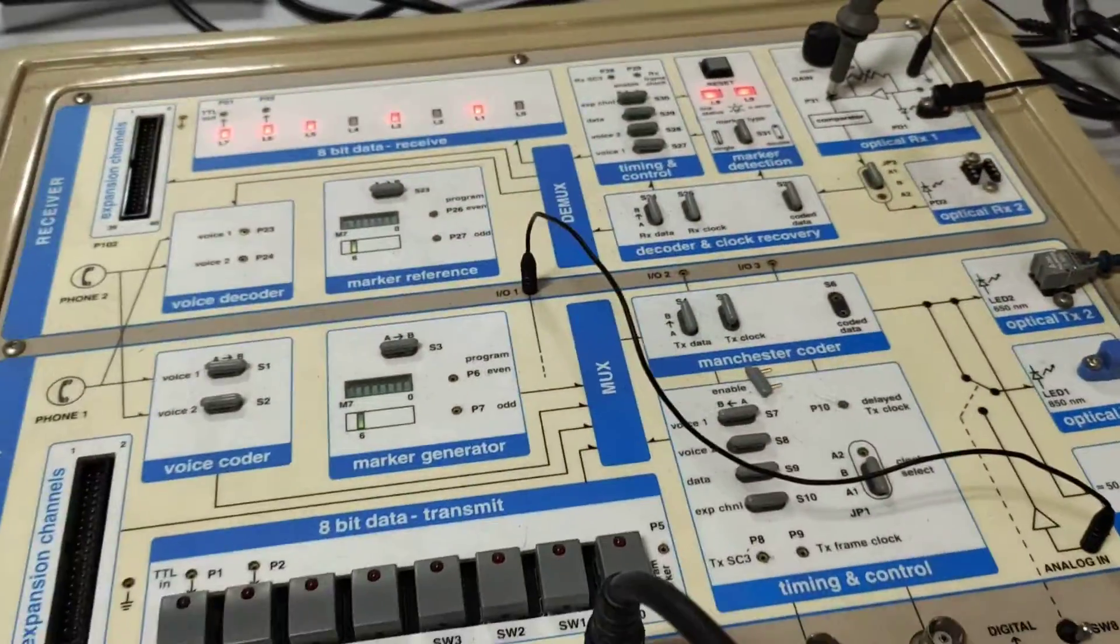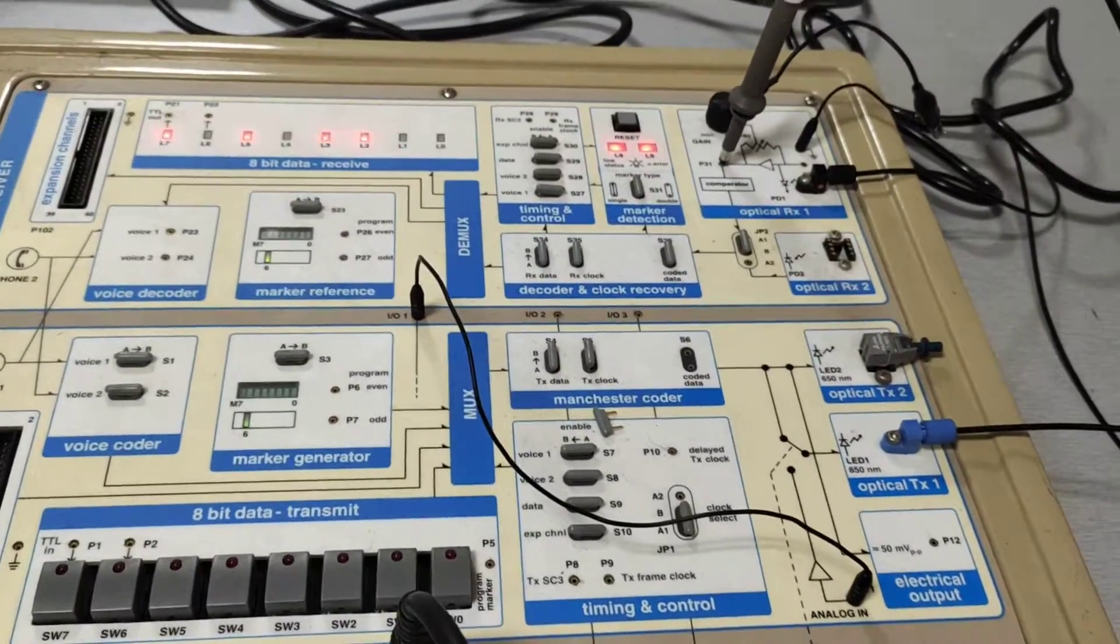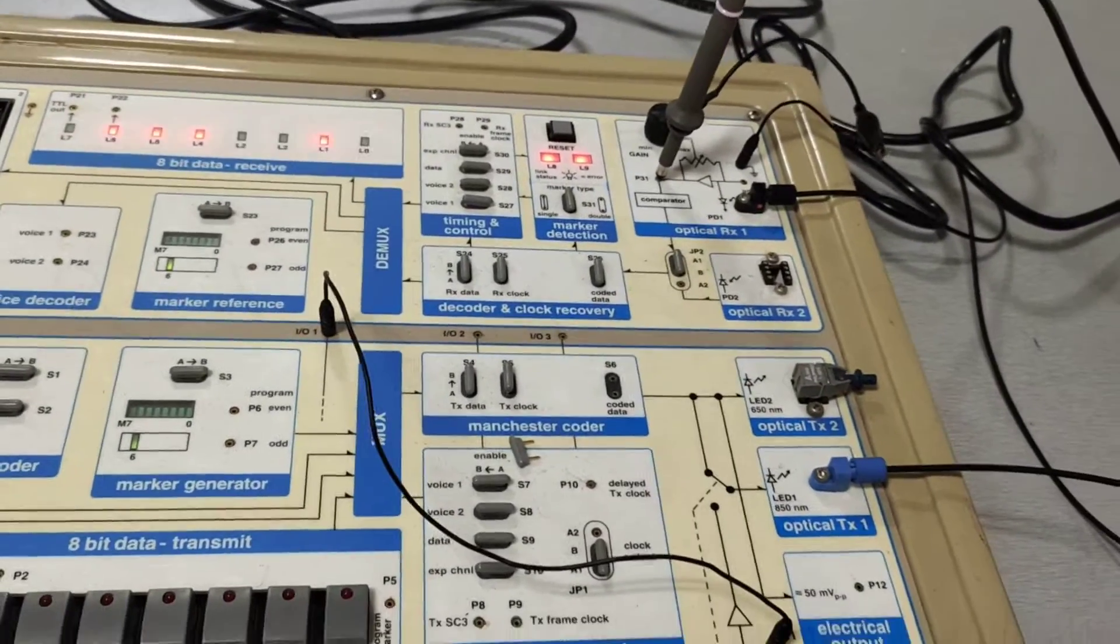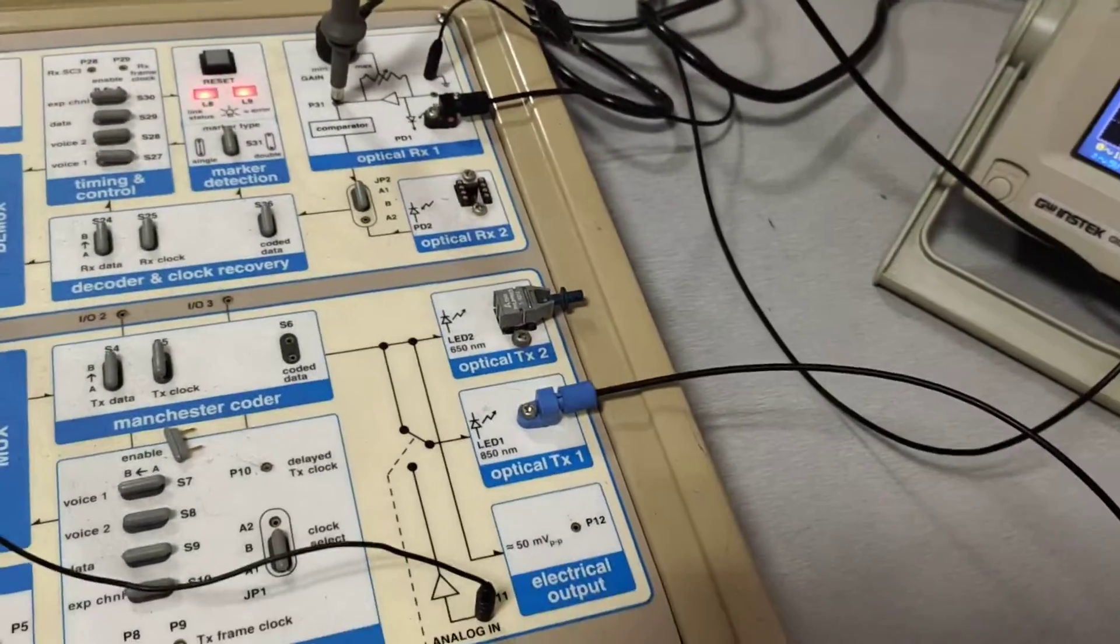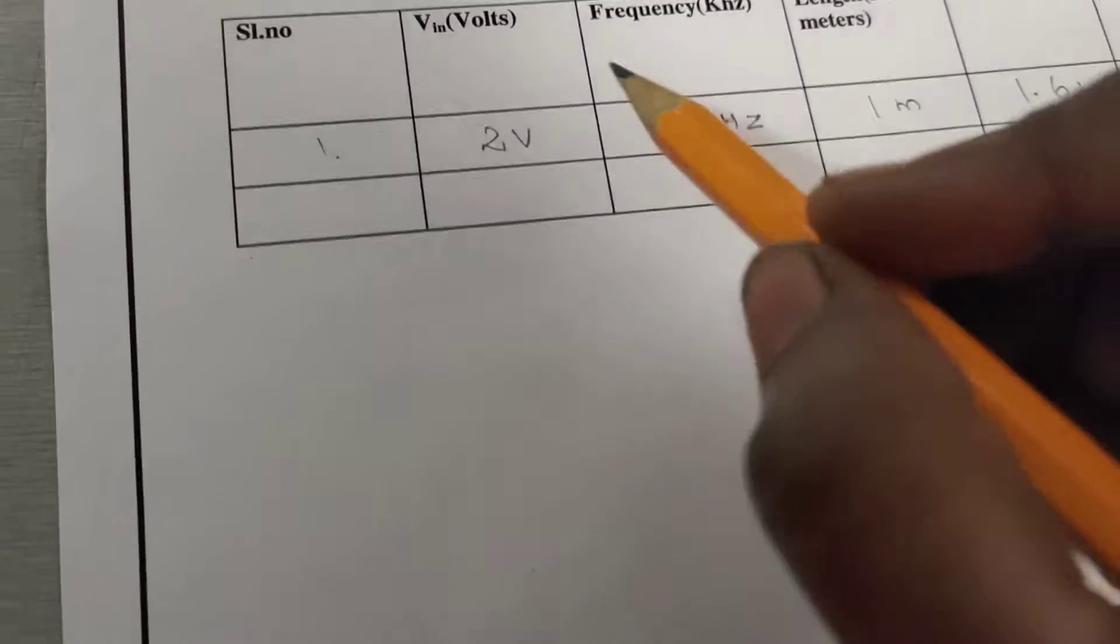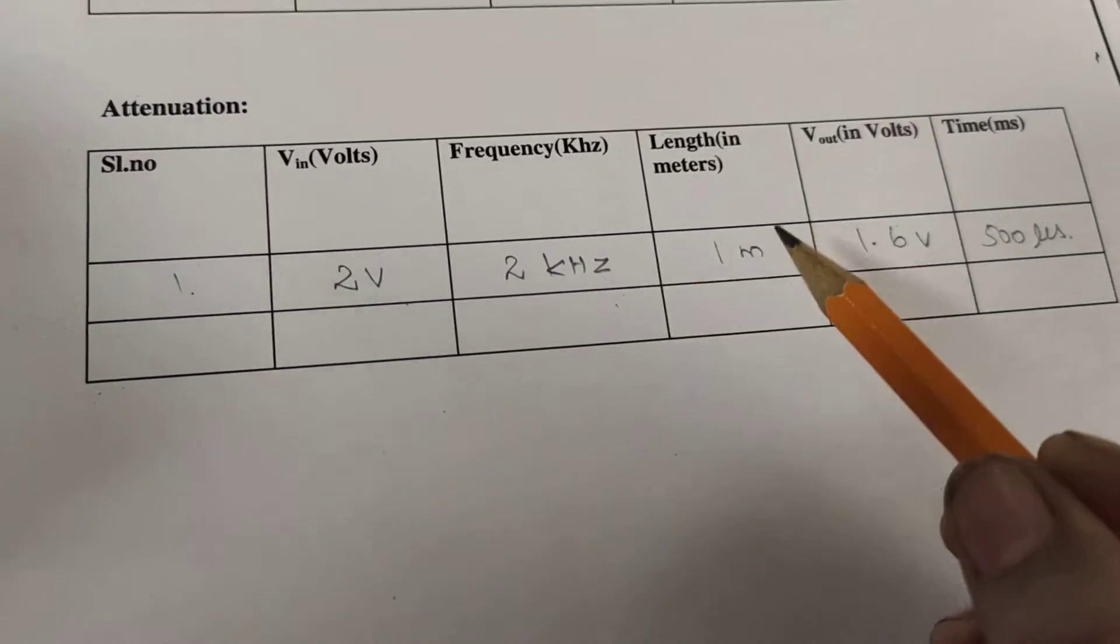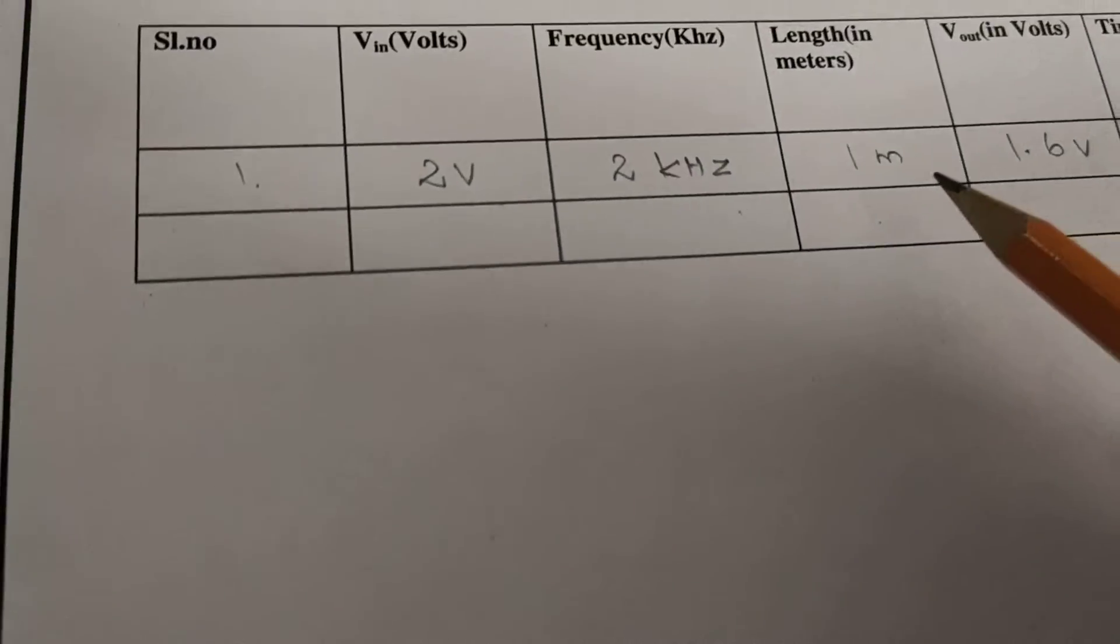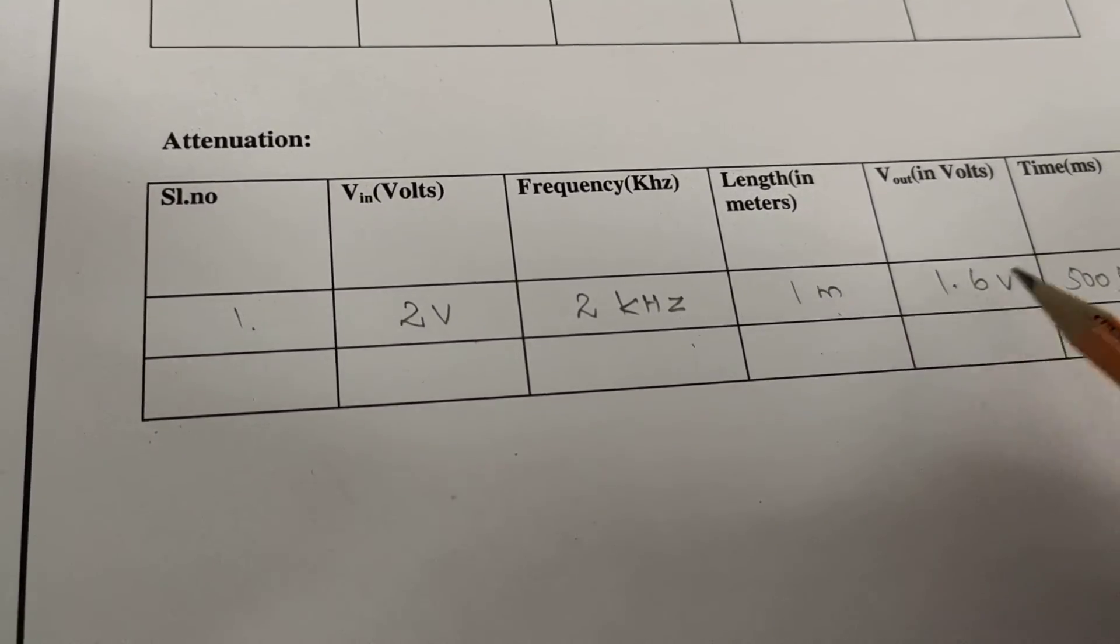The same way, we are going to measure output voltage while connecting 3 meter optical fiber. Note down the value: V in is 2 volt, 2 kilohertz, cable length is 1 meter and V out is 1.6.